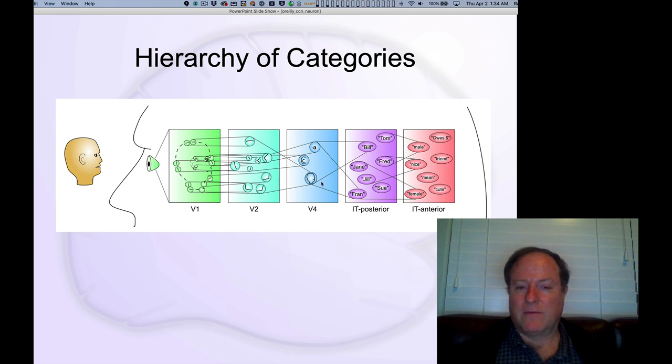Then in layer four, the process continues. It's a little bit harder to really say exactly what the layer four representations look like, but they're certainly more complex than what you see in V2, such that by the time you end up in IT, which is very conveniently named IT—that's where it is represented. This is actually infratemporal cortex. You have representations of actual people, faces, objects of all sorts. You have very high level representations, and these are the things that you can actually act on in the world.